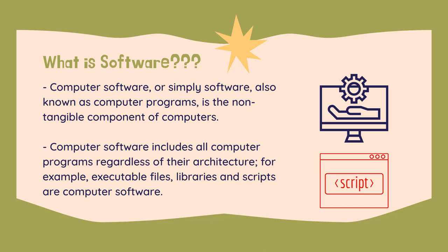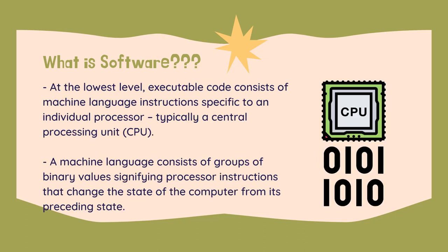Software consists of clearly defined instructions that, upon execution, instruct hardware to perform the tasks for which it is designed. Software is stored in computer memory and cannot be touched. At the lowest level, executable code consists of machine language instructions specific to an individual processor, typically a central processing unit.